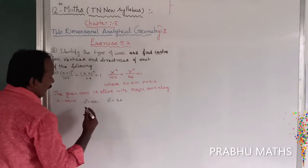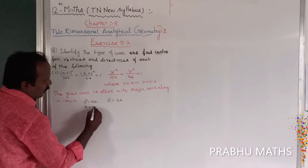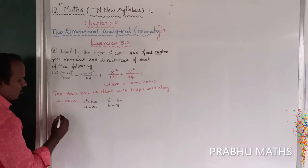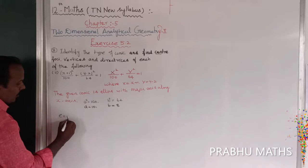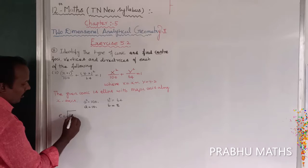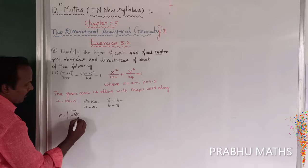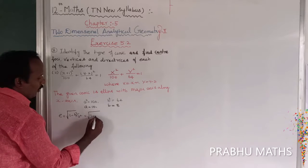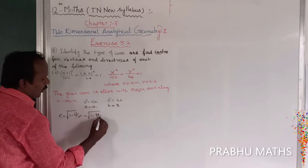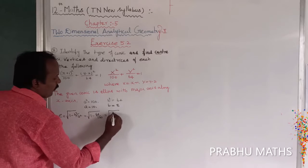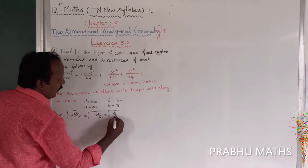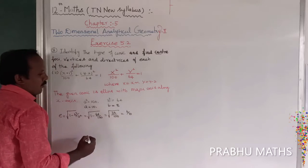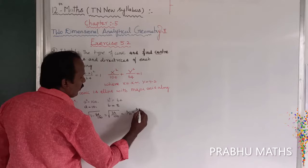a is equal to 10, b is equal to 8. First, find the value of e: e = √(1 - b²/a²) = √(1 - 64/100) = √(36/100) = 6/10 = 3/5.